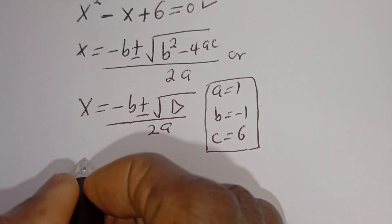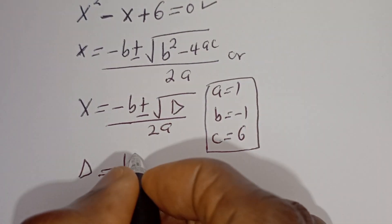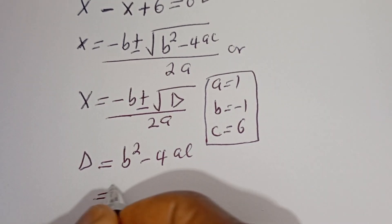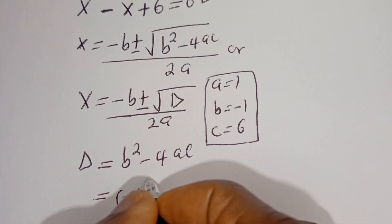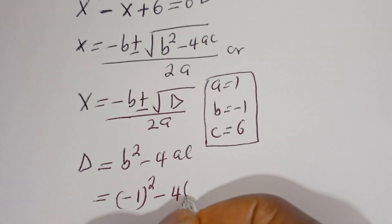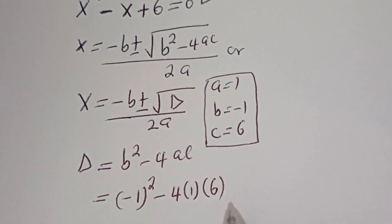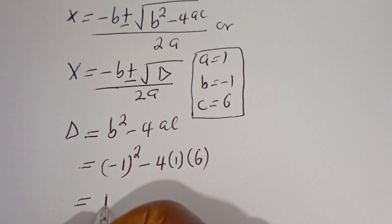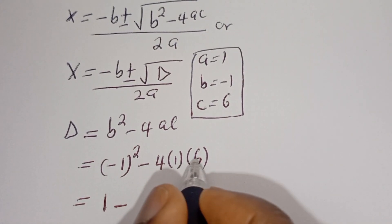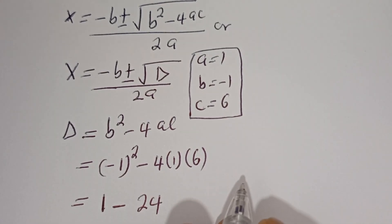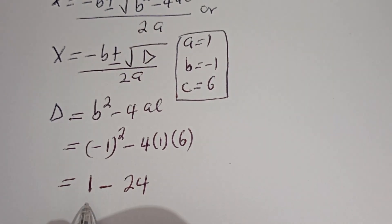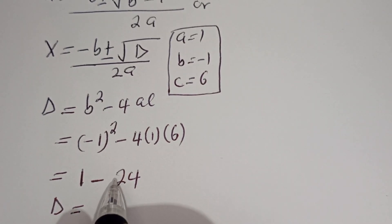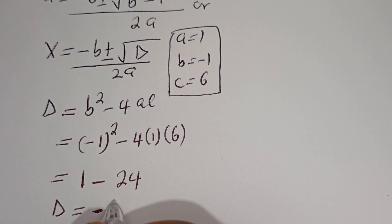Now the discriminant D is equal to b squared minus 4ac. This is equal to minus 1 squared minus 4 multiplied by 1 multiplied by 6. That is 1 minus 24, so D is equal to minus 23.